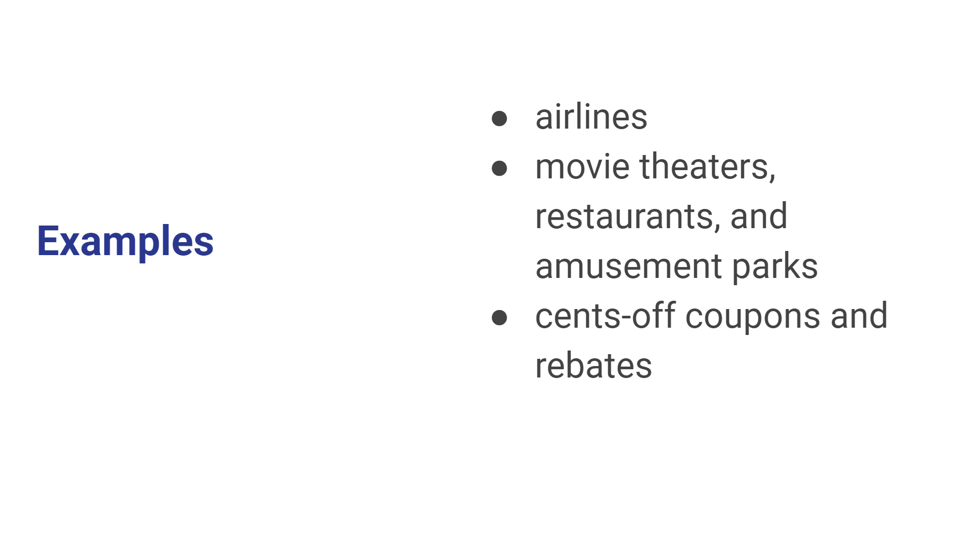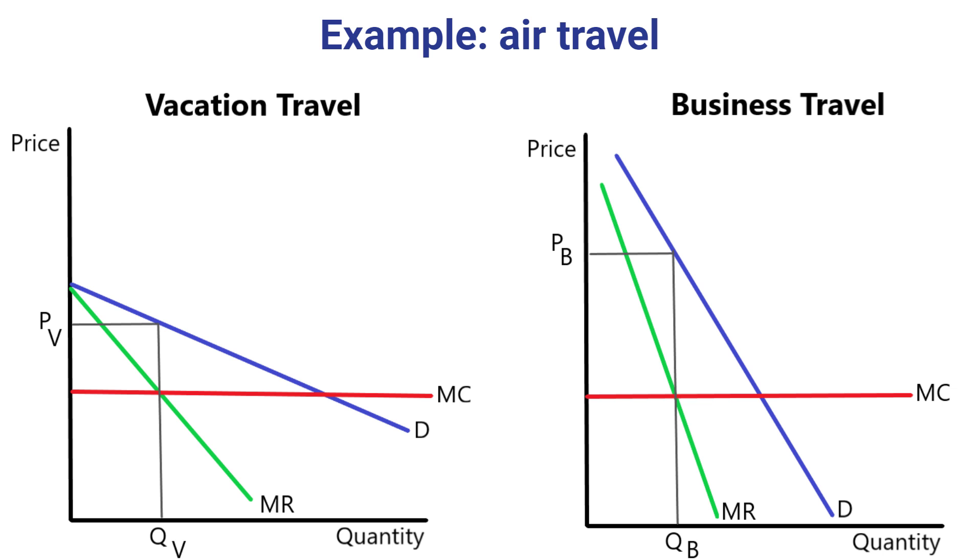Let's see how price discrimination works in practice. Let's go back to that example of air travel. Here we've illustrated a situation where the demand for business travel is relatively more inelastic at any given quantity than the demand for vacation travel is. And as a result, we end up with a demand curve that's relatively steep for business travel and relatively flat for vacation travel, holding other things constant.